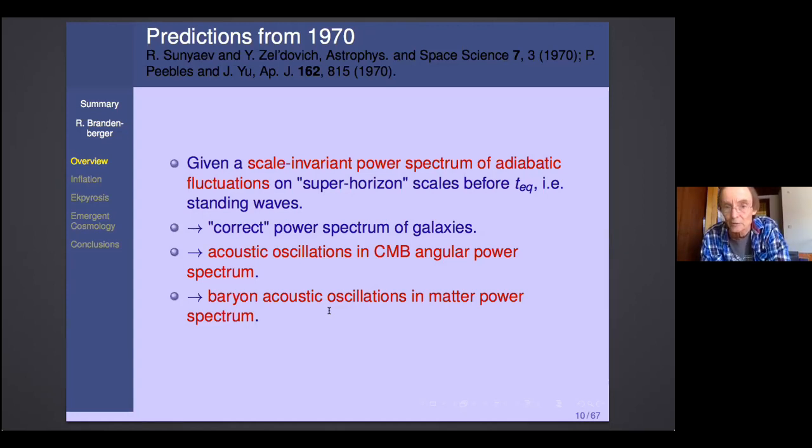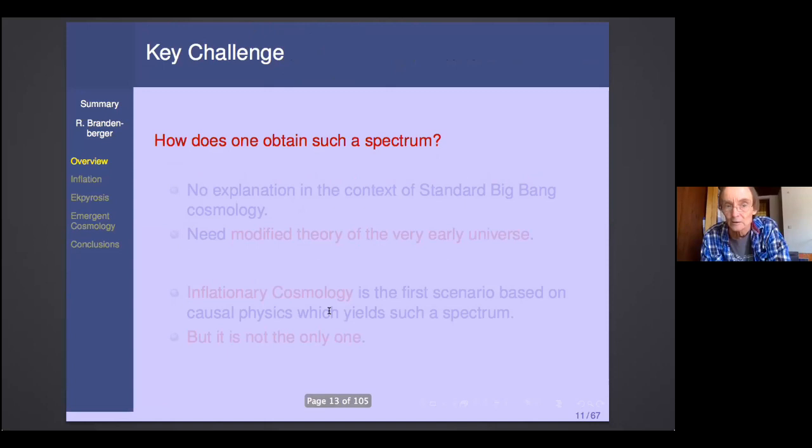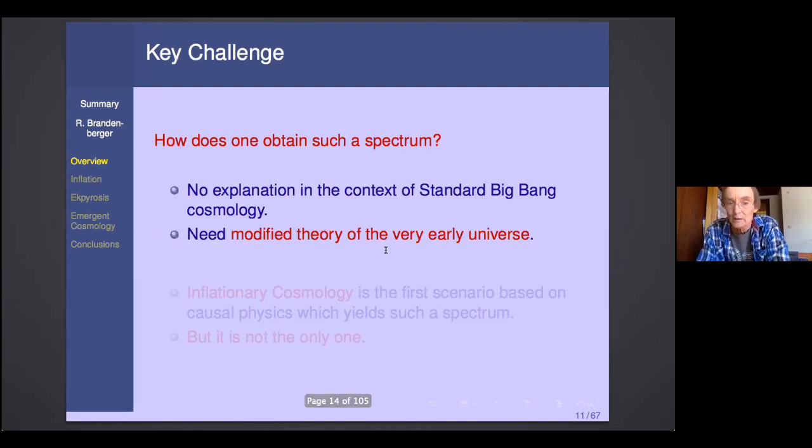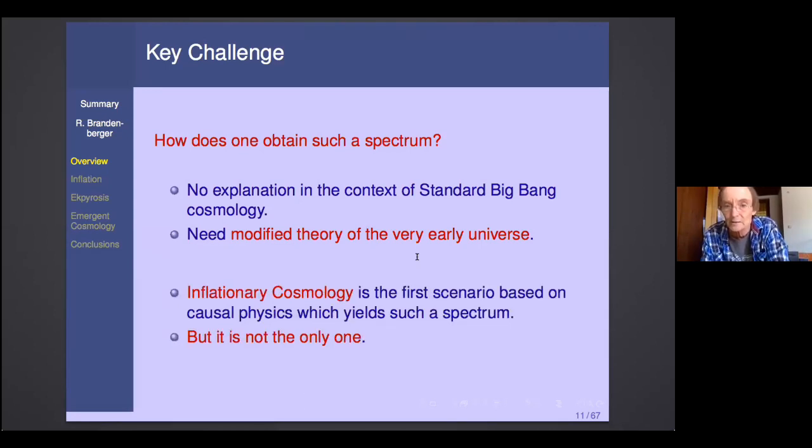So where does that leave inflation? Well, the question that was not addressed back in 1970 is how does one obtain such a spectrum. In fact, there is no explanation for the origin of such a spectrum in the context of standard big bang cosmology. And we need to modify the theory of the early universe if we want to have a chance to explain the data. And inflationary cosmology is indeed the first scenario based on causal physics, which yields such a spectrum, but this is not the only one.